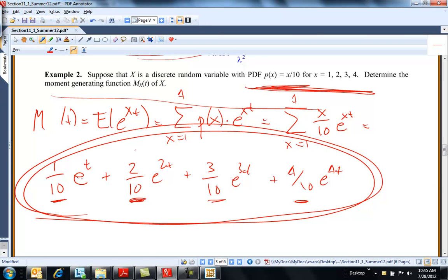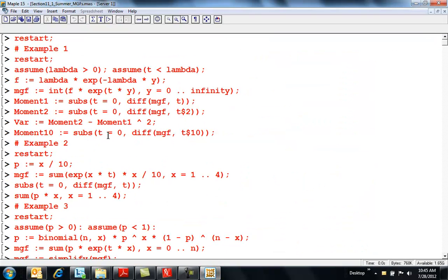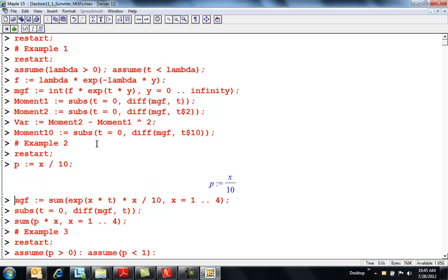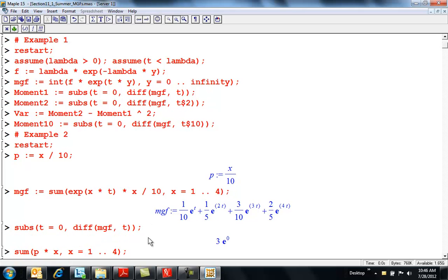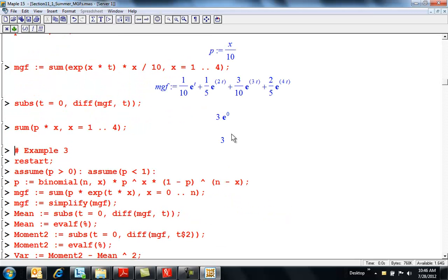It's not hard to take derivatives of this. I put it in Maple. So there is my P of X. There's my moment generating function that we just did. I'm going to take the derivative and put in T equals 0. And that's 3, which is 3. I'm finding the expected value by P of X times X, which we did before, which is 3.